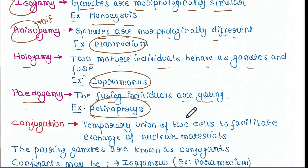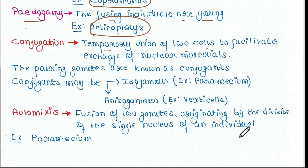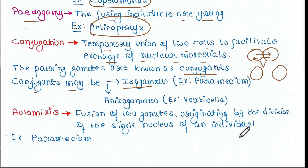Next we have conjugation and automixis. Conjugation is the temporary union of two cells to facilitate exchange of nuclear materials. The two cells unite, exchange their genetic material, and then separate again. The pairing individuals are known as conjugates. Conjugates may be isogametes or anisogametes. Isogametes means conjugates are of similar types, found in paramecium. Anisogametes means conjugates are of different types, found in vorticella.